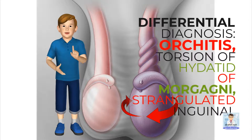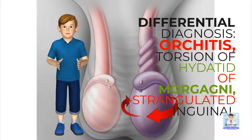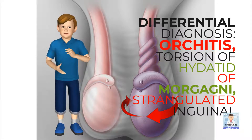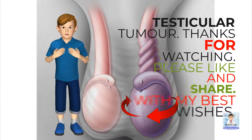Differential diagnosis: orchitis, torsion of hydatid of Morgagni, strangulated inguinal hernia, and testicular tumor.